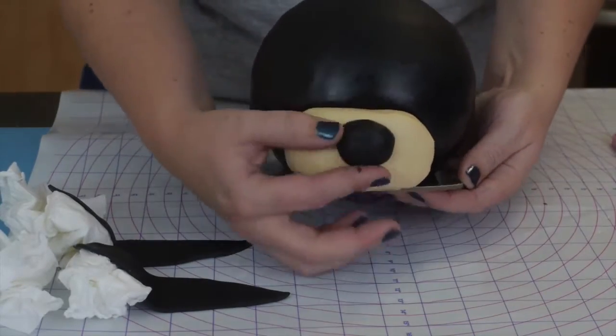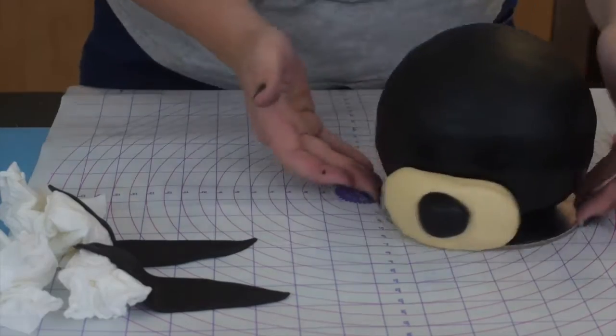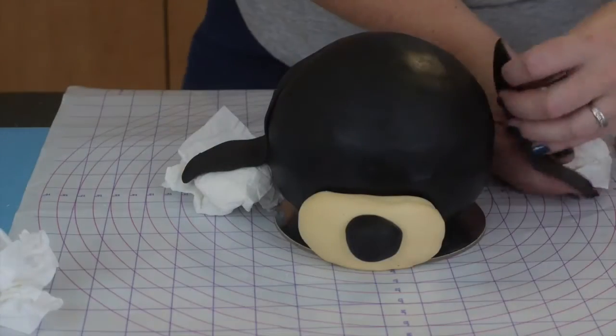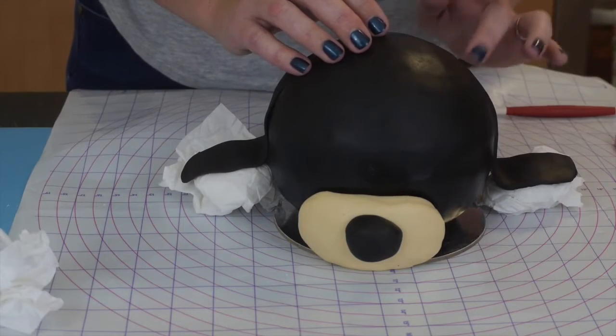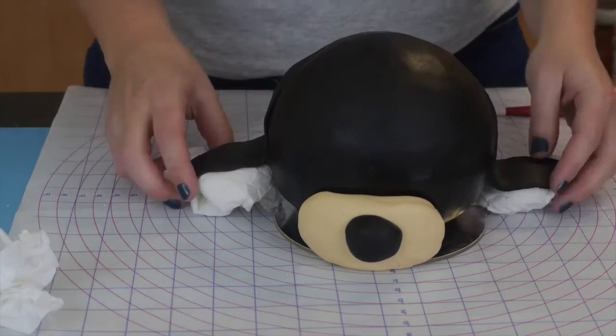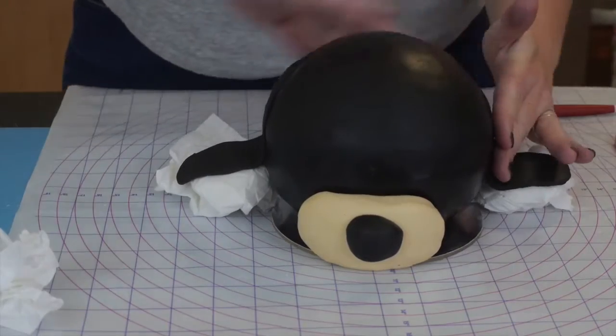Next let's add our ears onto our Goofy head. So just take your ears and press them gently onto your ball head. Smooth it out a bit so obviously those ears look like they belong on that head and they haven't been tacked on.